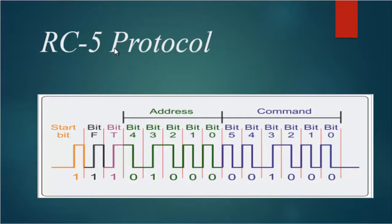Now the remote we are going to use, a Philips remote, it uses RC5 protocol. In RC5 protocol, there are actually 14 bits. Among these, two are start bits, a toggle bit, five address bits, and six command bits.